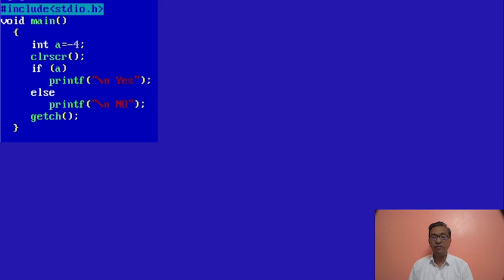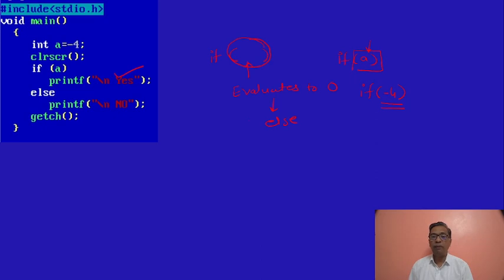Remember this: if whatever condition we have mentioned evaluates to 0, it will execute the else-part. In all remaining cases, it will execute the if-part. Here we have written 'if a' — this is not a condition, we have written only 'if a'. So the compiler will check what is the value of a. Here value of a is minus 4, so this becomes 'if -4'. This is not 0, so it will execute the 's' part. If this bracket evaluates to 0, only then will the compiler execute the else-part. So here, a is minus 4 which is non-zero, so it will execute the if-part.